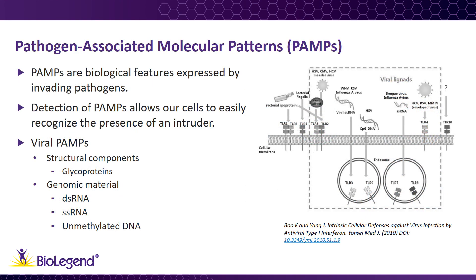Humans are constantly being exposed to microorganisms like bacteria, fungi, and viruses. Since many of these organisms are capable of causing severe disease in their hosts, our cells have evolved ways to recognize characteristics unique to the invaders. These are features that are not normally expressed by host cells, so their presence is a clear indication of infection. Microorganisms that are able to cause disease are called pathogens, and the features that they commonly express that help our immune system recognize them are called pathogen-associated molecular patterns, or PAMPs.